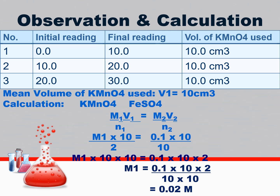For observation and calculation, proceed the same as in acid-base titration — take three readings and draw a table. Initial reading can start from 0; for example, if 10 cm³ of KMnO4 is used, your final reading is 10. Continue from 10, and if volume used reaches 20, again the volume is 10 cm³. In this way take three readings. If all readings are 10, calculate the mean volume by adding all three and dividing by 3 — mean volume is 10 cm³.